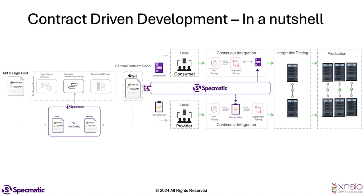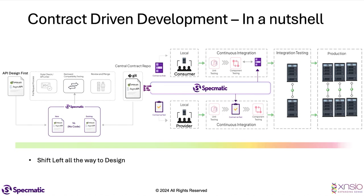There are some key advantages to this approach. First is the whole shift-left. The bar at the bottom highlights that the later you catch an issue, the more expensive it gets — so you want to shift it left. With Specmatic, we are trying to shift this all the way to the design level, where the provider and consumer can collaborate and identify any mismatches as early as design time itself.